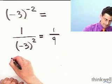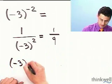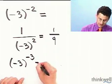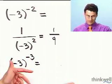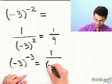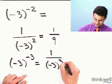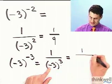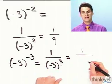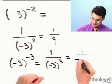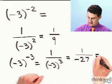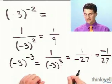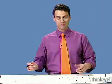Let's try another one: minus 3 raised to the minus 3 power. The negative exponent means I flip the whole thing. Now I have to multiply negative 3 by itself 3 times: negative 3 times negative 3 is 9, times negative 3 is negative 27. I like to write the negative on top, so the answer is negative 1 over 27.